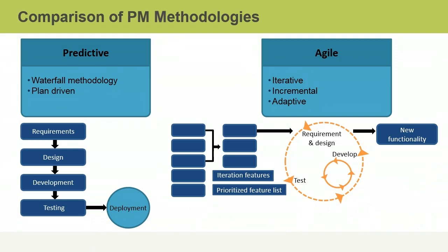Some projects use Agile methodologies. Agile projects are characterized by iterative and incremental life cycles. The phases overlap, with one phase starting before the previous phase finishes. This can speed up the project, but may also result in rework if issues are encountered. The scope is tentatively determined early in the project and then clarified as the project proceeds. This is called rolling wave planning.